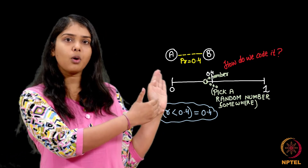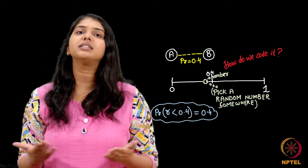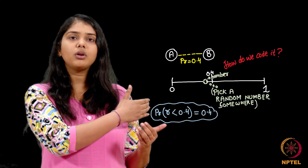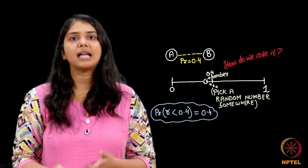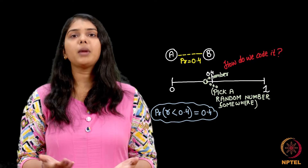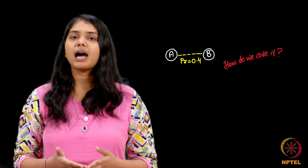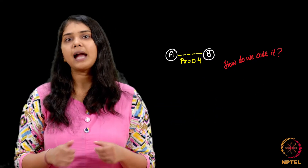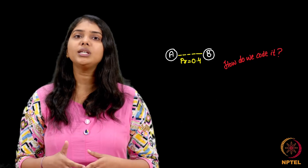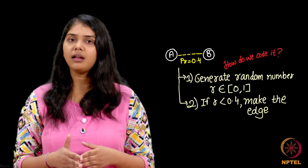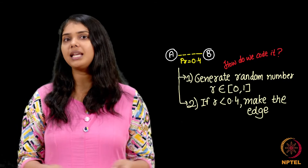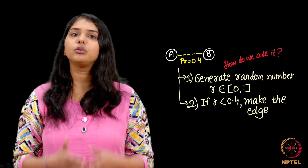The range 0 to 0.4 is a smaller slot, while 0.4 to 1 is a bigger slot, so there is a lesser chance of the number falling below 0.4. For two nodes U and V that we want to connect with probability 0.4, we generate random number R from 0 to 1, and if its value is less than 0.4 we make an edge between them; otherwise we do not.